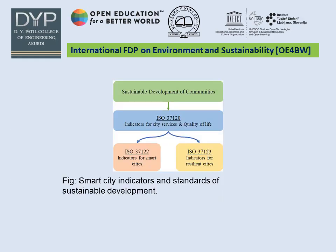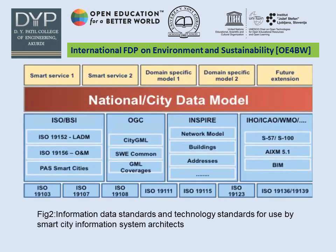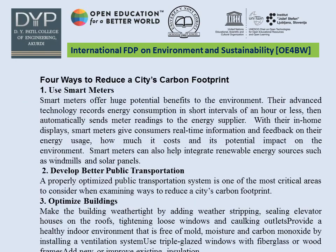Here are the different smart city indicators with respect to different ISO standards in sustainable development. ISO 37120 covers indicators for city services and quality of life. ISO 37122 is specifically for smart cities. ISO 37123 covers indicators for resilient cities. These standards and technology standards support smart cities through different innovation system architectures.